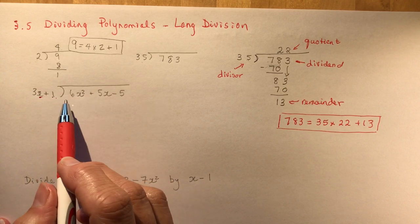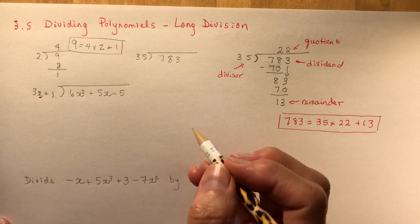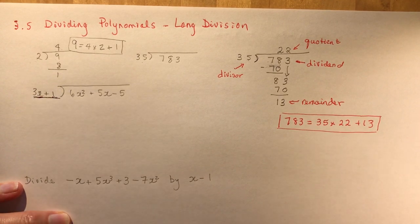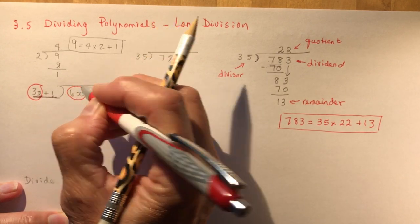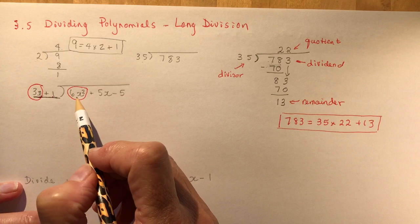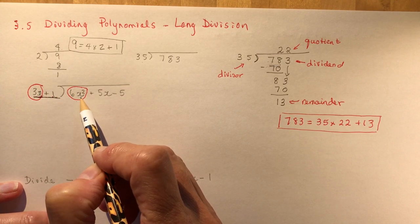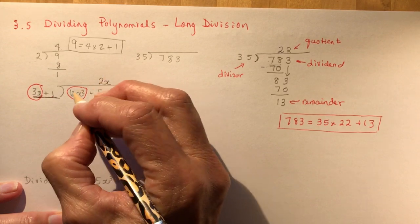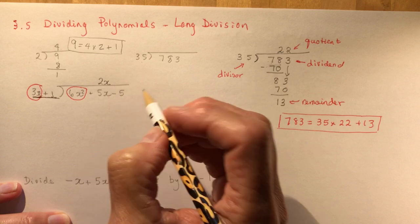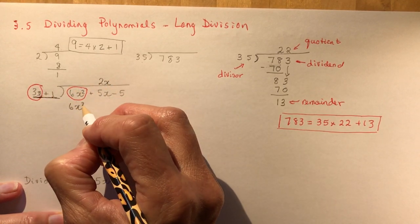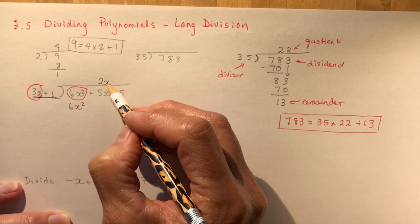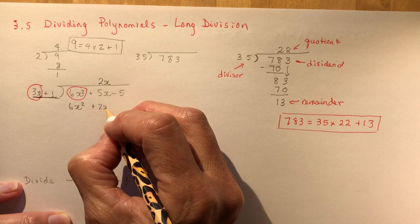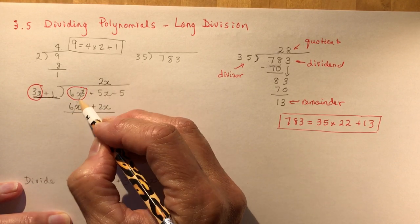For the first polynomial example, I have 3x plus 1 divided into 6x² plus 5x minus 5. You want to look at the leading term 3x and ask: what do I have to multiply 3x by to get 6x²? The answer is 2x. Put 2x in the right place above 5x. Then 2x times 3x is 6x², and 2x times 1 gives plus 2x.